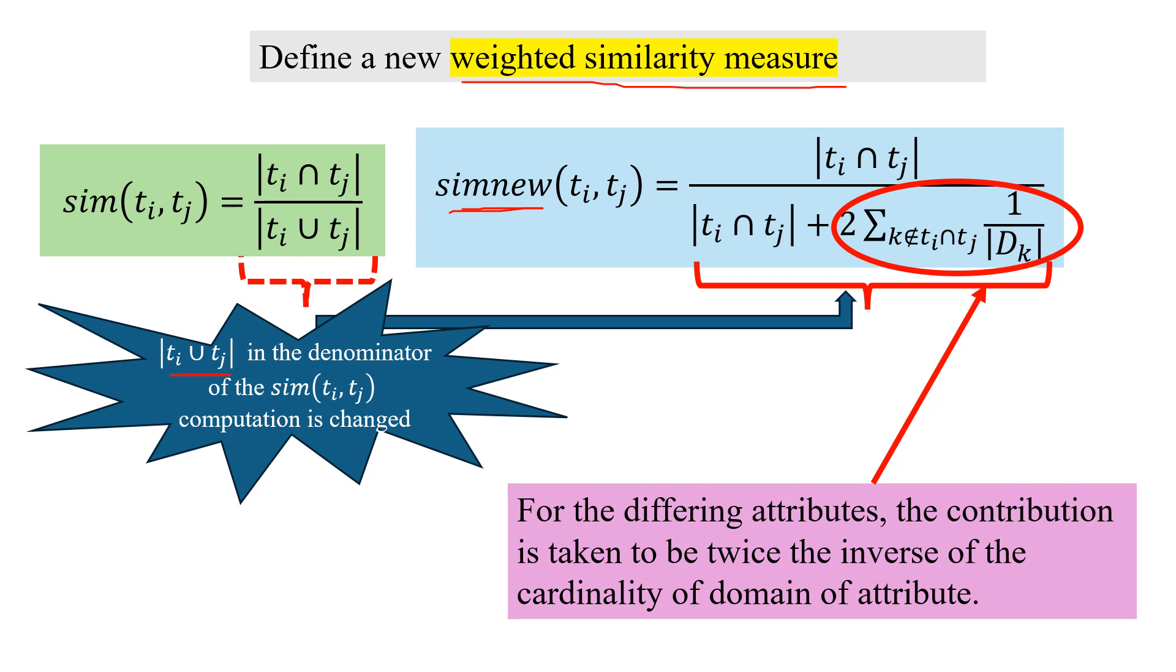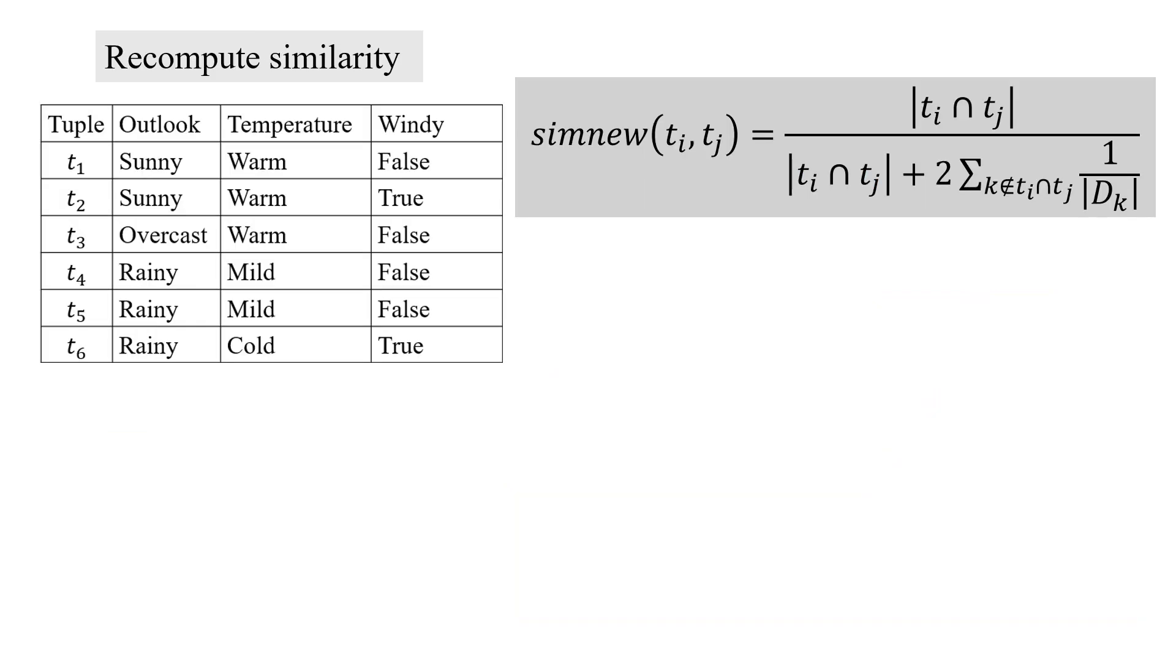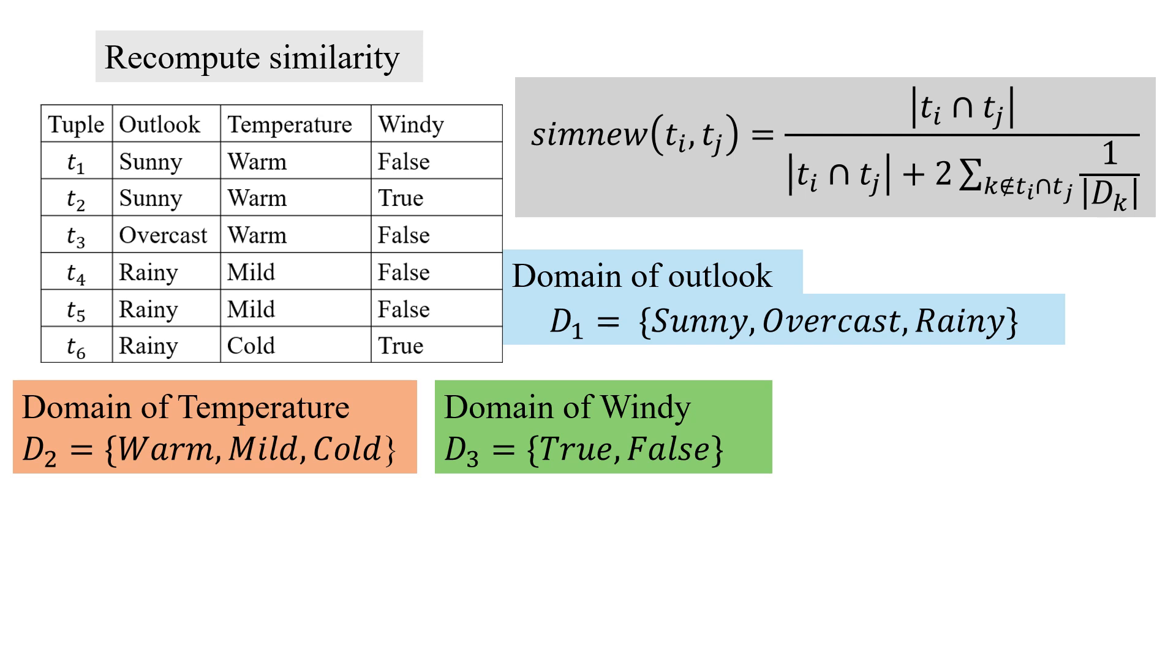For k does not belong to ti intersection tj - these are the common attributes - here we are taking those which are not common where the two tuples are different. For them we take the inverse of the size of the domain. This is our new similarity measure.